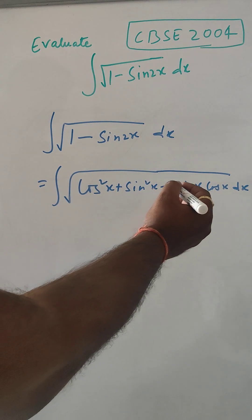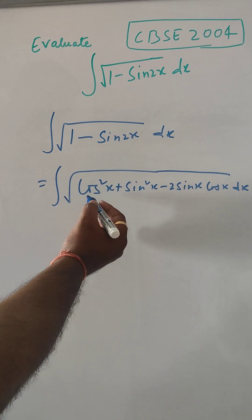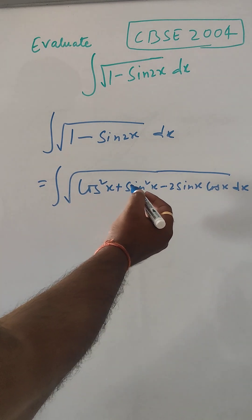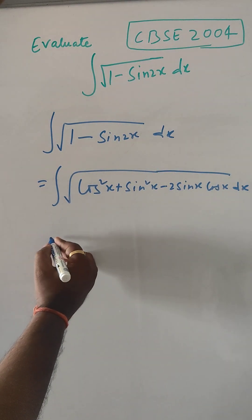So, this is a minus b whole square formula, like cos x minus sin x whole square.